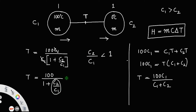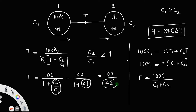So the denominator is 1 plus a value less than 1, which is always less than 2. When the denominator equals 2 the result is 50 degrees Celsius, and when it is less than 2, 100 divided by that quantity is always greater than 50 degrees Celsius. Therefore the final equilibrium temperature t is greater than 50 degrees Celsius — that is the correct option.